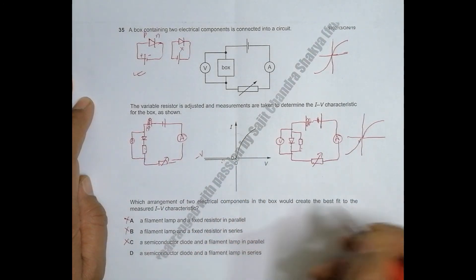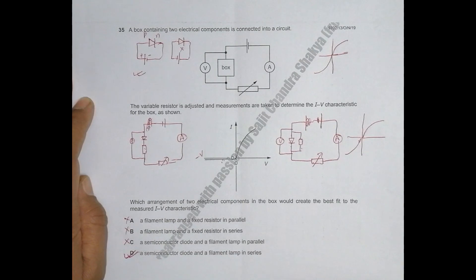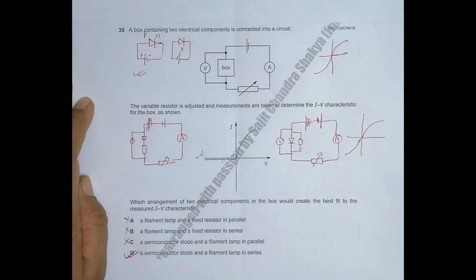So the graph corresponds to an arrangement with a semiconductor diode and a filament lamp in series, because in reverse the diode blocks current, which is exactly what this graph shows. The answer should be choice D. A pretty tough question, but applying the right technique identifies the correct answer.